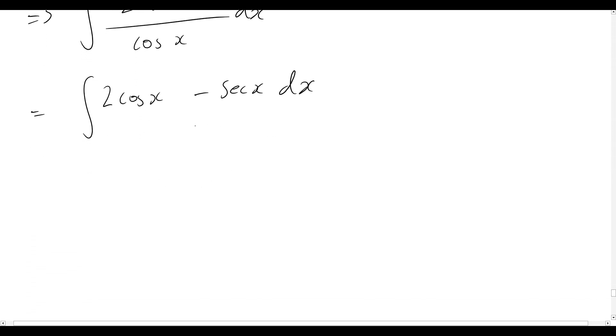Okay, so now we notice that we can actually just rewrite this as two separate integrals. So we see our first integral is simply going to be two times the integral of cos(x) dx and then minus the integral of sec(x).